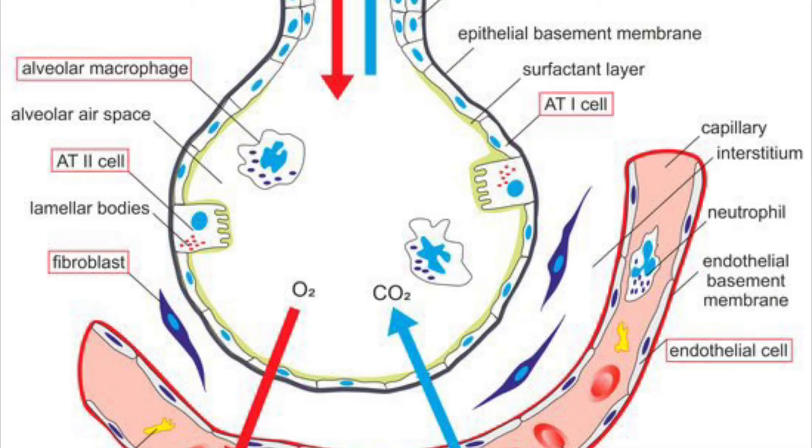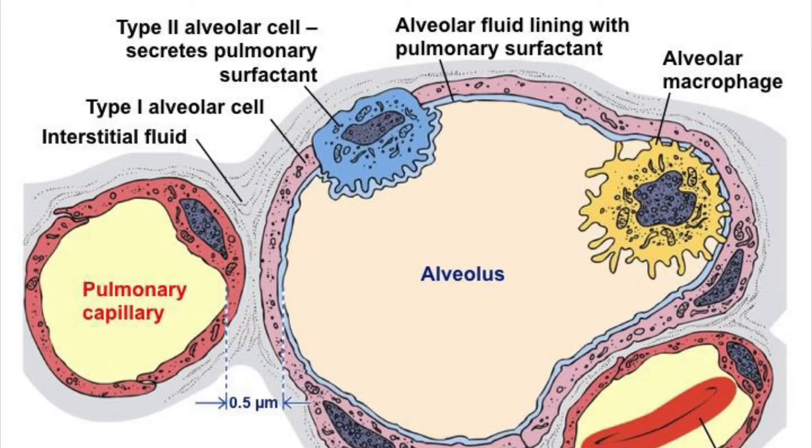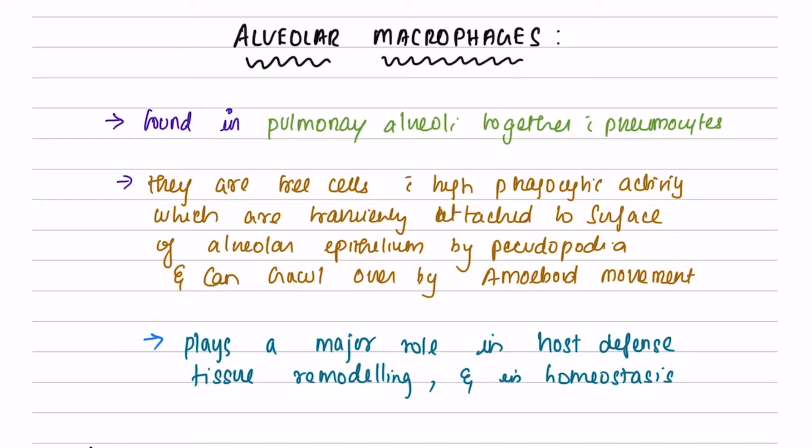The third type of cells are the alveolar macrophages. They produce a variety of signaling chemicals that interact with the other cells of the immune system to orchestrate a response that maintains immunological and tissue homeostasis in body. Alveolar macrophages are free cells with high phagocytic activity.